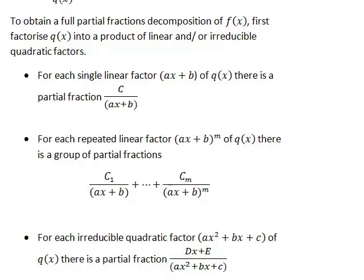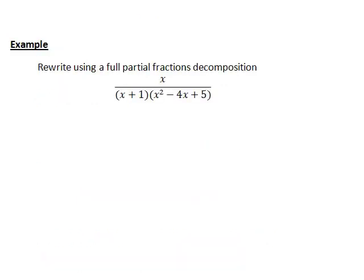So let's have a look at applying this to an example. In this case we have the expression x divided by (x plus 1) times (x squared minus 4x plus 5), and we want to rewrite it using a full partial fractions decomposition. Looking at this, the (x plus 1) part is a single linear factor. And what about x squared minus 4x plus 5?